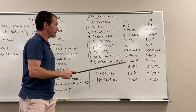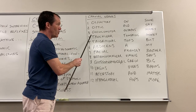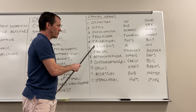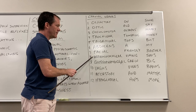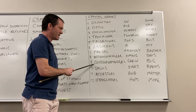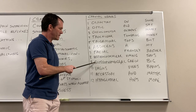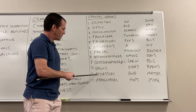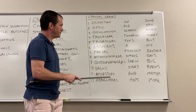Here are the twelve cranial nerves in order: olfactory, optic, oculomotor, trochlear, trigeminal, abducens, facial, vestibulocochlear, glossopharyngeal — that's a mouthful, and that's a pun — vagus, accessory, and hypoglossal.